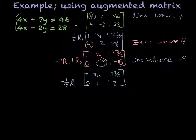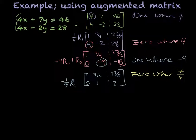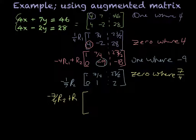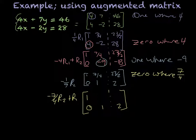Now I have one more step. My final step is to get a 0 where the 7/4 is. That's going to be negative 7/4 times row 2 plus row 1. My second row won't change. 0 times negative 7/4 plus 1 is 1. Negative 7/4 times 1 is negative 7/4, plus 7/4 is 0. Negative 7/4 times 2 plus 23/2 — if you type that into the calculator, you should get 8. So our final answer is 8, 2.